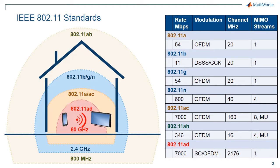The most commonly deployed standards are 802.11a, b, g, n, and ac. They operate in the 2.4 GHz or 5 GHz band with a channel bandwidth between 20 and 160 MHz. 802.11ah operates in the 900 MHz band, allowing links to penetrate walls and floors and span distances up to 1 km.